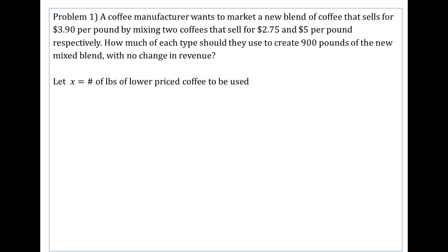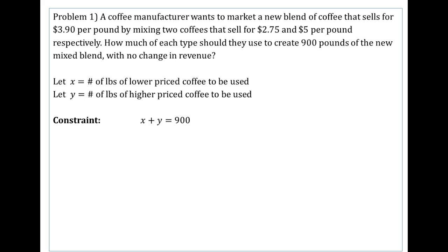When solving a word problem, we let our variables equal our unknowns. In this case we'll use two, since we want to know how much of each type. Let x equal the number of pounds of lower-priced coffee, and let y be the number of pounds of higher-priced coffee to be used. We know the total must be 900 pounds, so our constraint is x plus y equals 900.